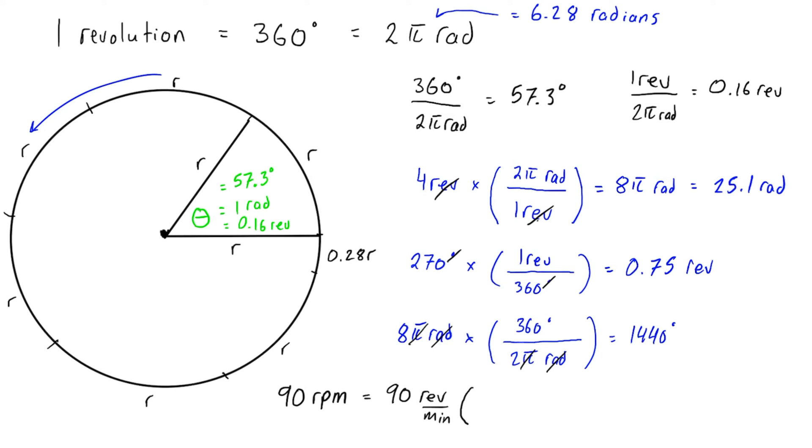We're going to convert 90 revolutions per minute to radians per second. All we have to do is knock out this revolution term, so we put one rev on the bottom and then we put the radians on top—it's equivalent to 2π radians.